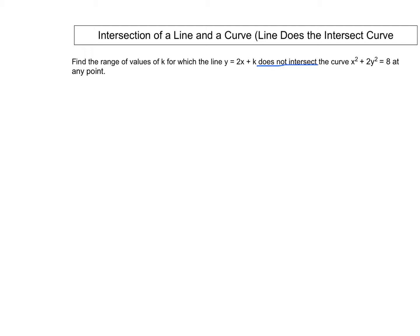First, we have the equation of the line as y = 2x + k. We call this equation 1. Next, we have the equation of the curve as x² + 2y² = 8. We call this equation 2.